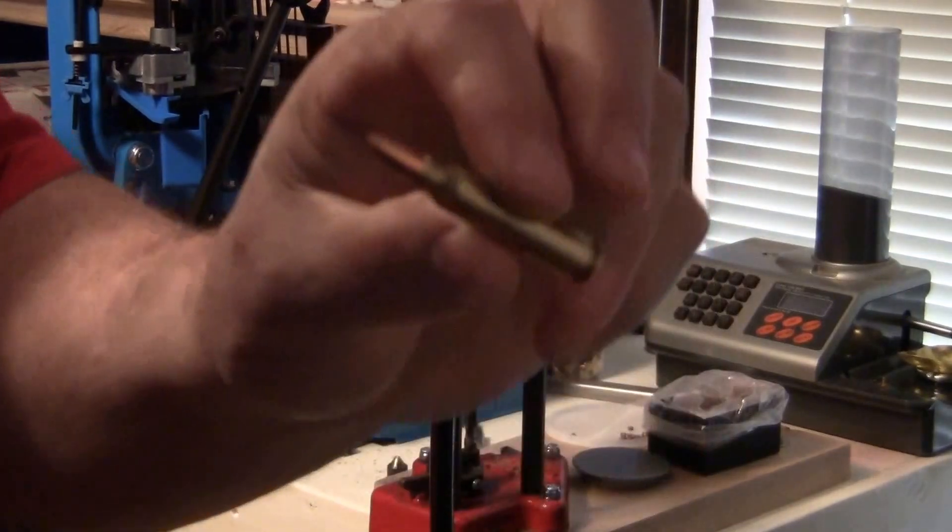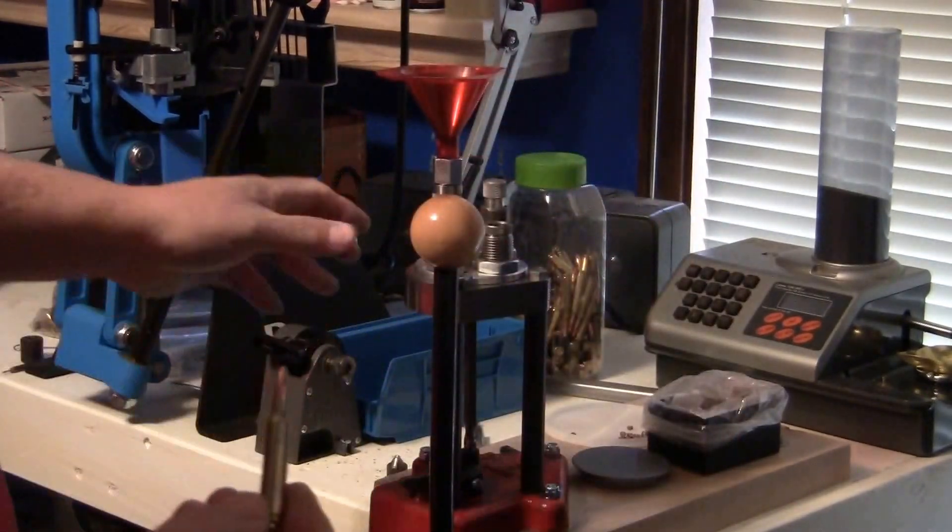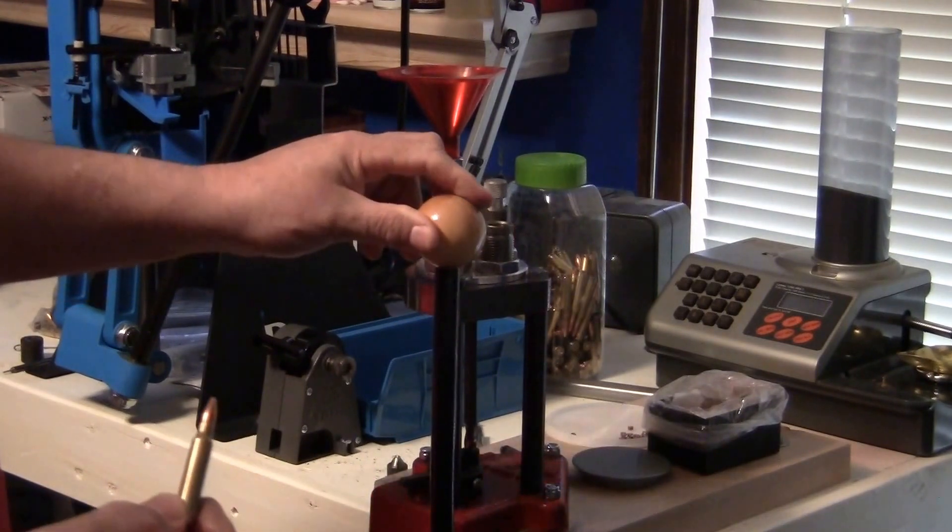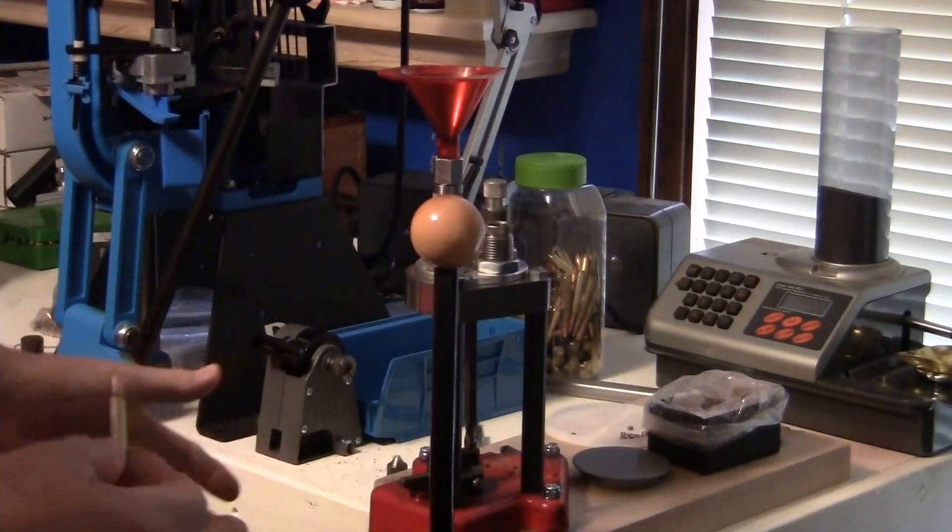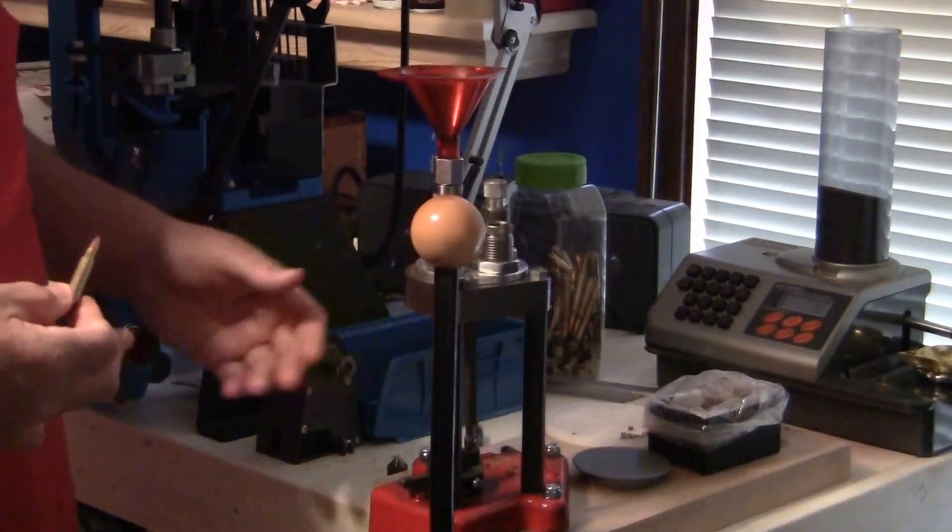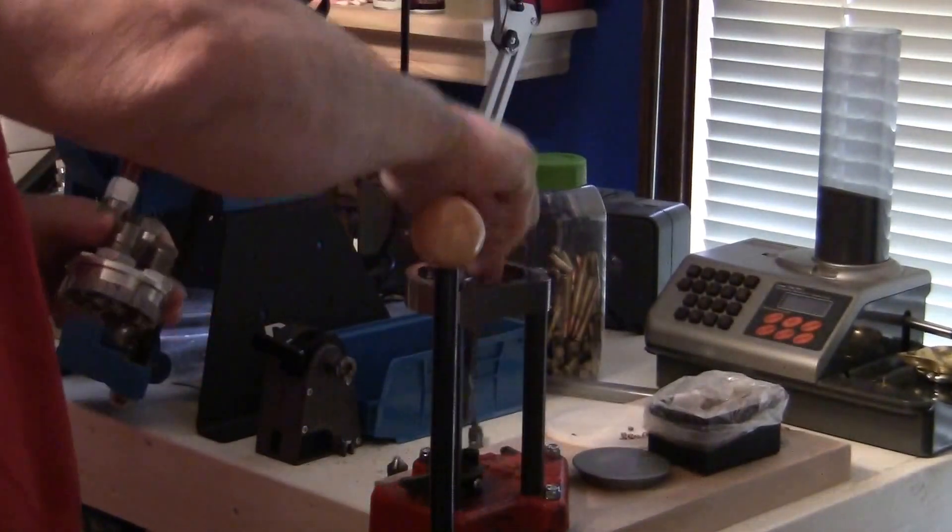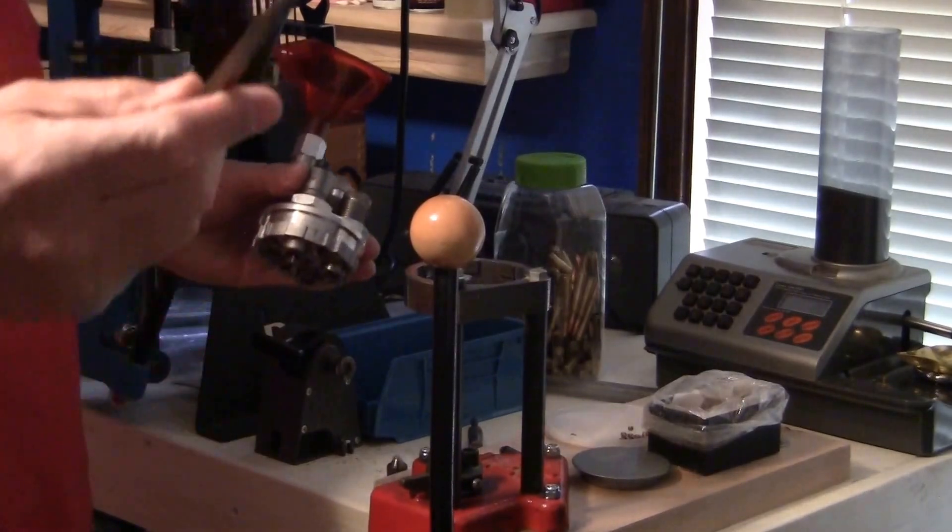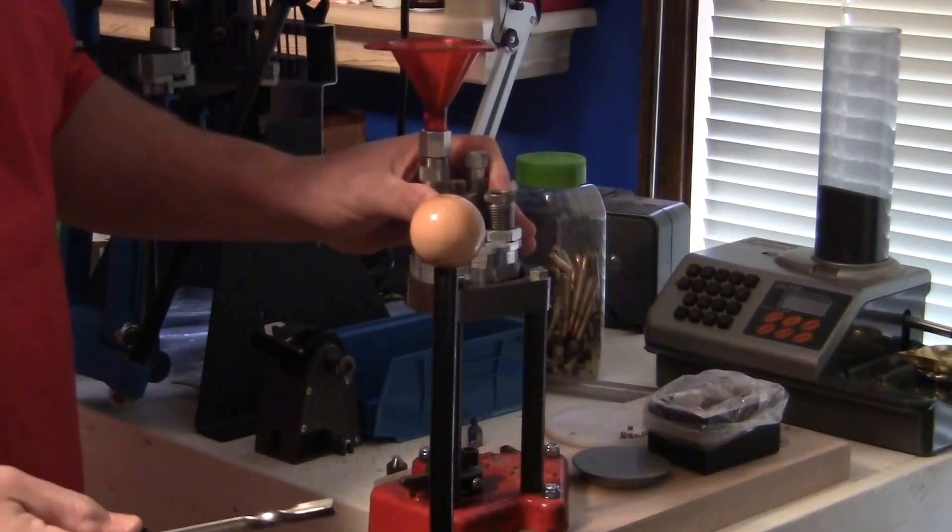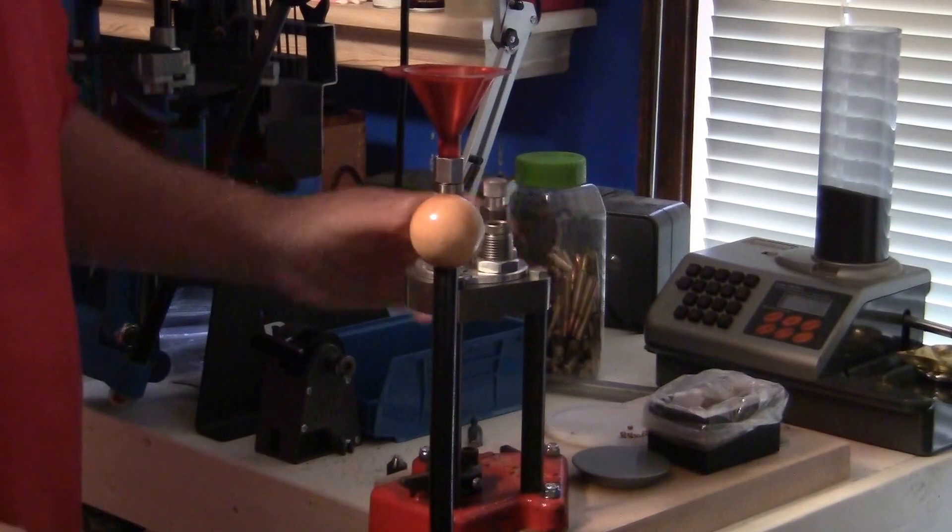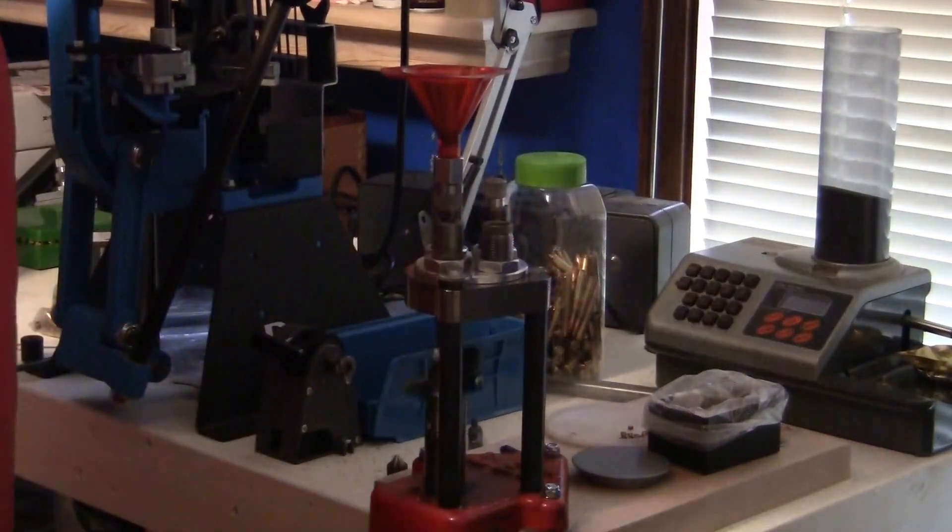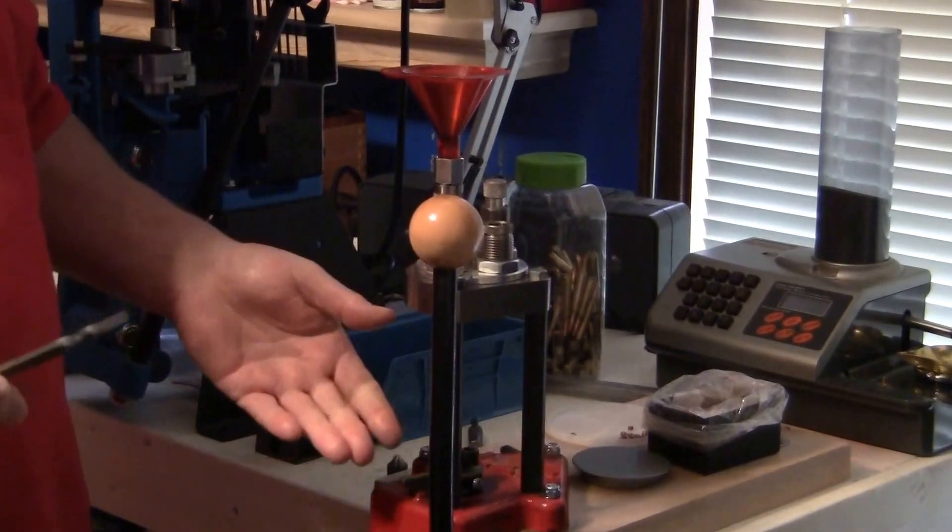There's another round. These turret presses are really great when you compare them to a single stage. You can actually change your caliber so quick, or you can use it as a single stage press by just taking out this little indexing tool. Put your turret back in there, and then you steadily just use that station each time if you just wanted to punch your primers out.